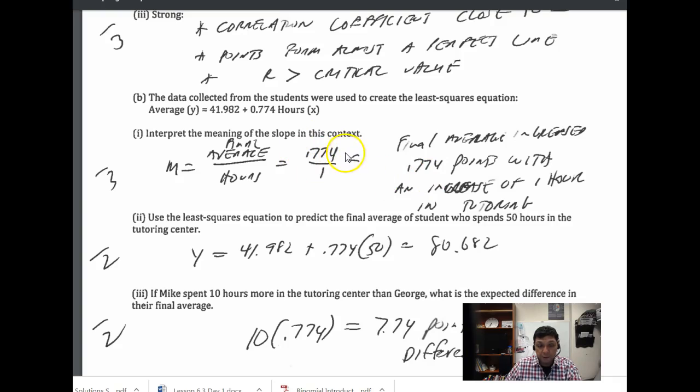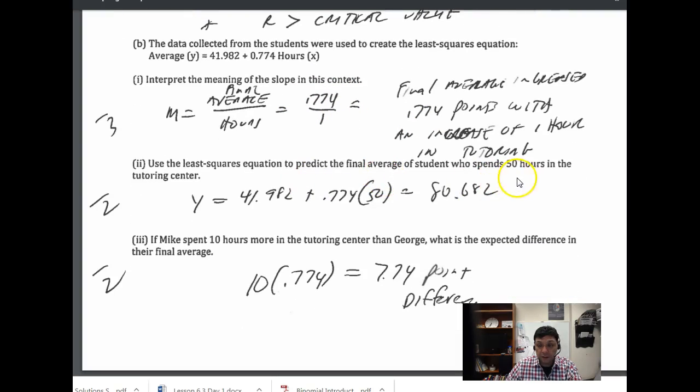How do you make a prediction? You substitute it in. And then if someone spent 10 more hours than somebody else, again this is how much your slope is, how much you increase by the hour, so you just multiply that 10 times the slope, and that tells you the point difference.